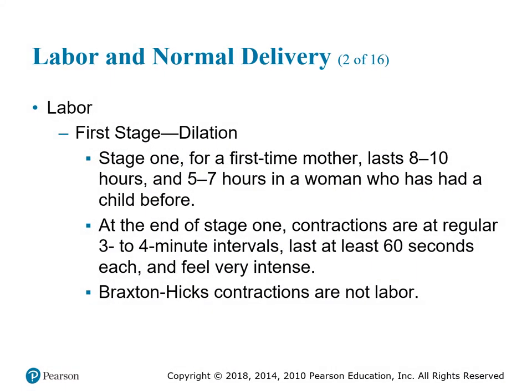The first stage of labor, also known as dilation, lasts 8 to 10 hours for a first-time mother and 5 to 7 hours for a woman who has had a child before. At the end of stage one, contractions are at regular 3 to 4 minute intervals, last at least 60 seconds each, and feel very intense. Braxton Hicks contractions are false labor contractions used by the body to practice. The difference between these and real contractions is that they do not decrease in time and do not increase in intensity.